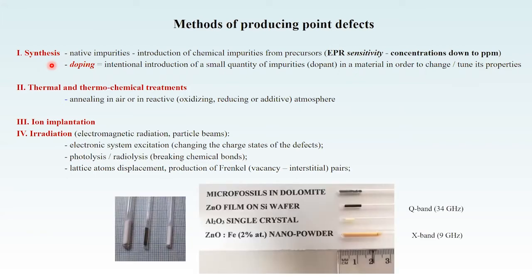These are different examples of materials that we study by EPR. The samples can be in powder form, as single crystals, or as thin films on a substrate, in different quantities for experiments at specific microwave bands. These are typical sizes. All these samples contain native impurities or dopants.